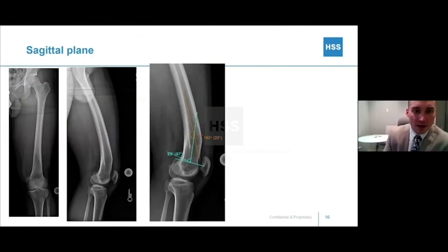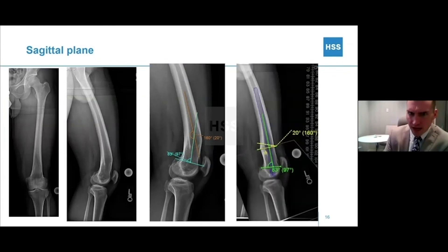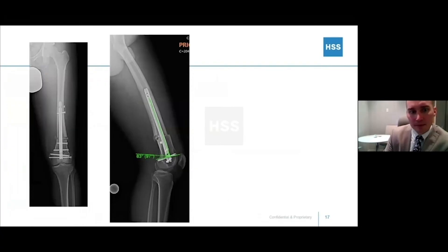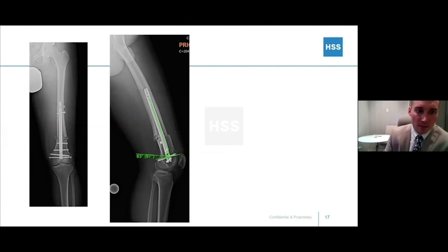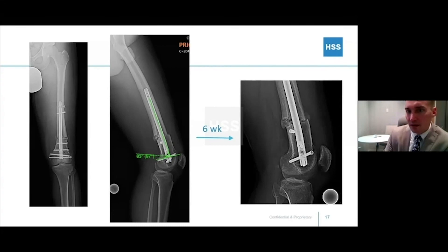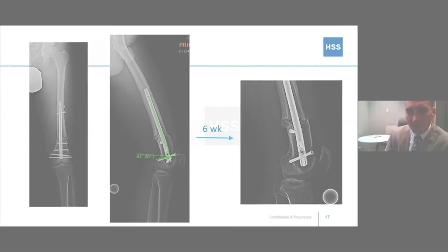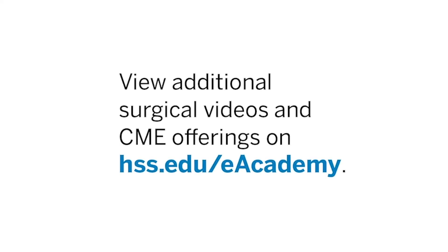The sagittal plane can also be corrected. With a 20-degree deformity, we draw out our angles and show the correction. This time it was planned with a nail, which can also be used — it doesn't have to be a plate. Blocking screws were used to ensure we achieved the correction, and joint orientation angles are normalized. Early healing is seen using percutaneous osteotomies.